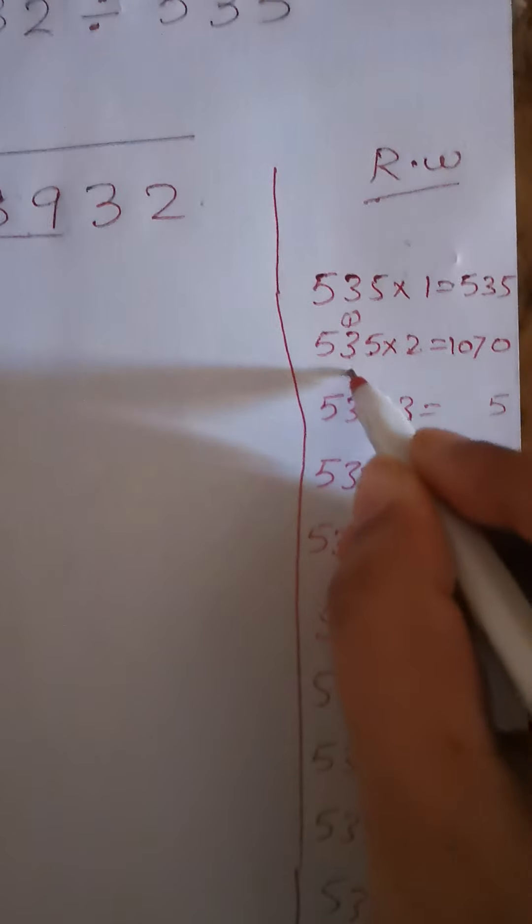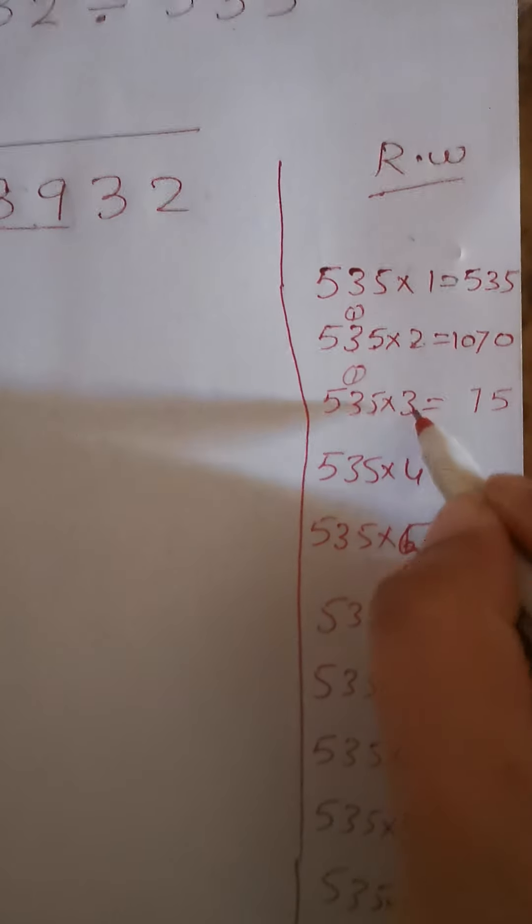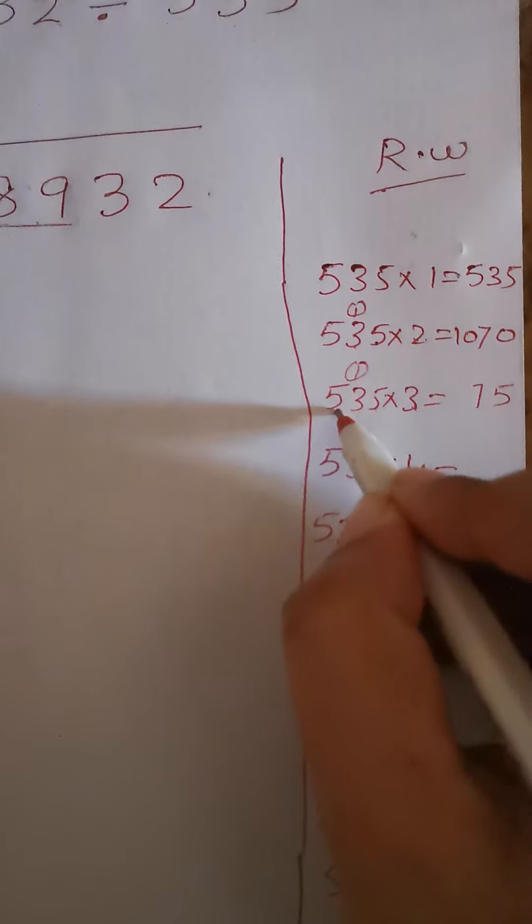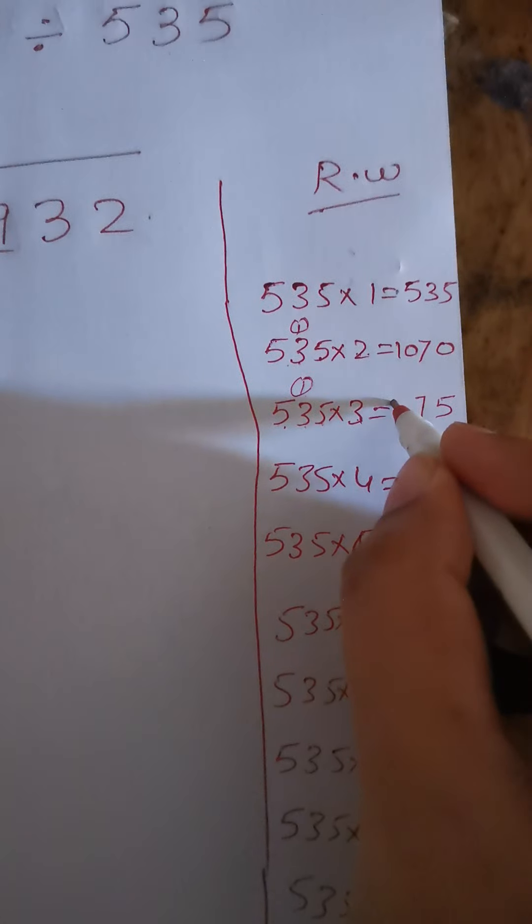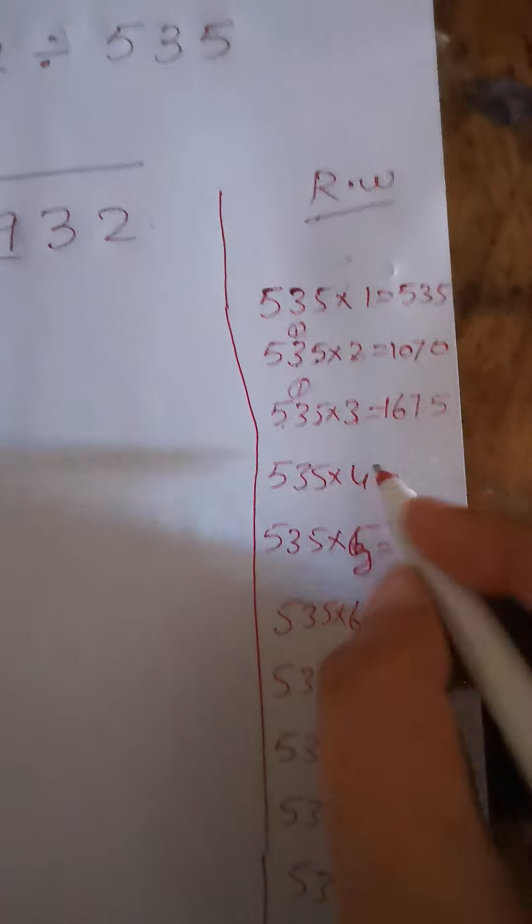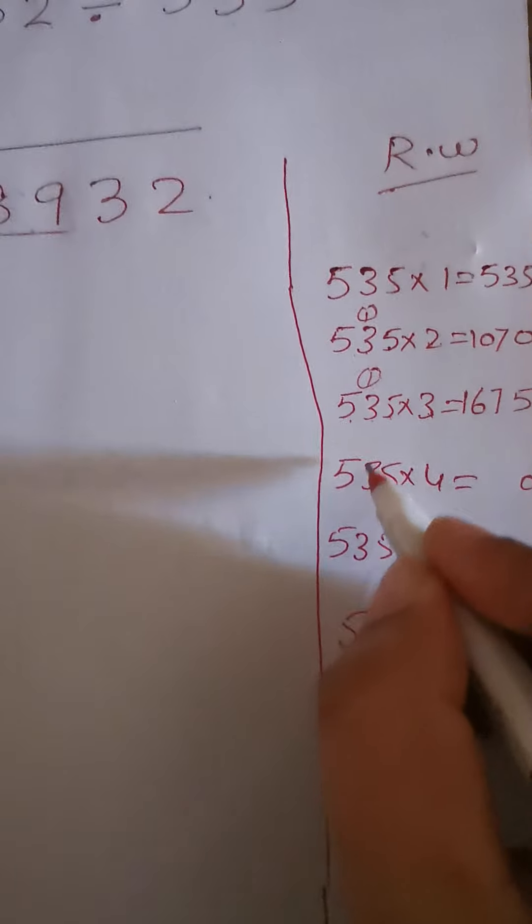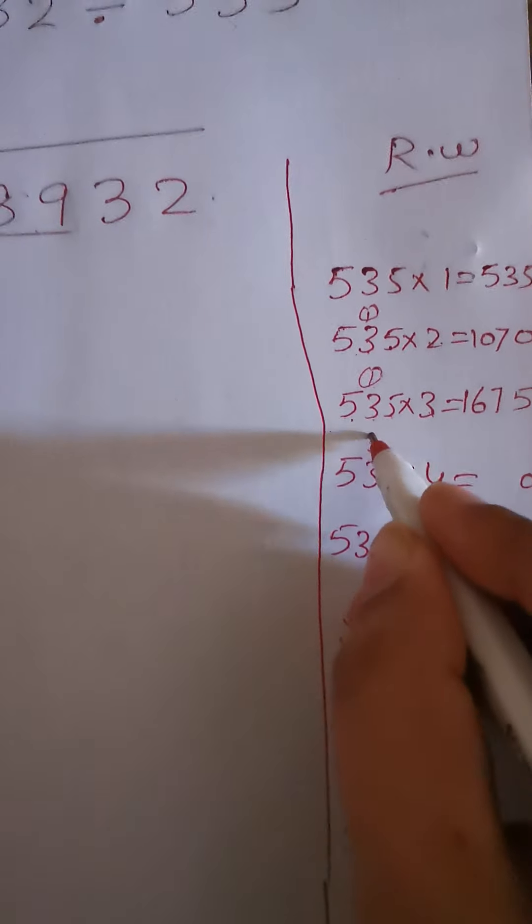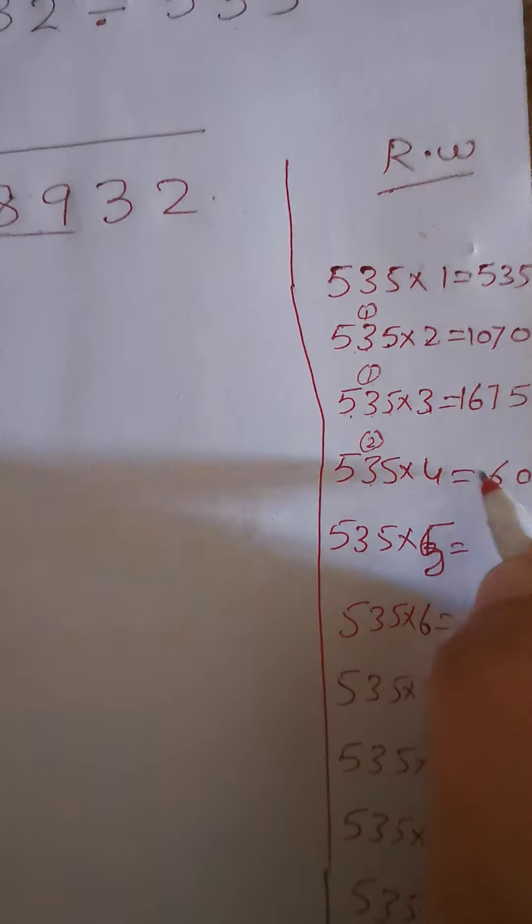For 535 times 3: 3×5 is 15, 5 with 1 carry, 3×3 is 9 plus 1 is 10, 3×5 is 15 plus 1 is 16. That's 1605. For 535 times 4: 4×5 is 20, 0 with 2 carry, 4×3 is 12 plus 2 is 14, 4×5 is 20 plus 1 is 21. That's 2140.